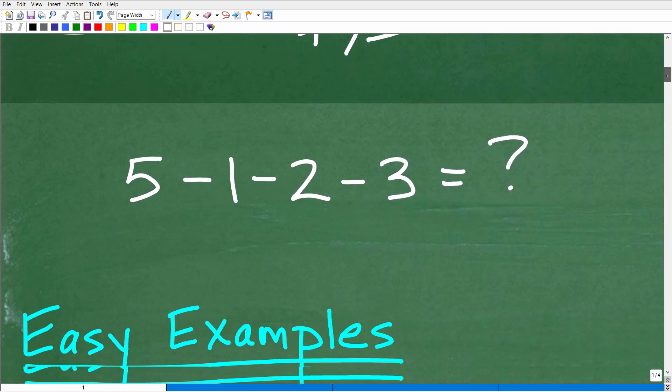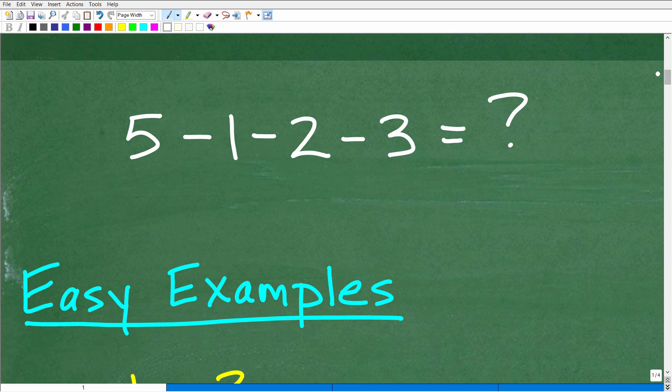Okay, so let's go ahead and get into this right now. So here is our problem. We have 5 minus 1 minus 2 minus 3. So what is the answer? Well, of course, I just told you it's negative 1. But how did we get to negative 1? Well, before we answer that question,